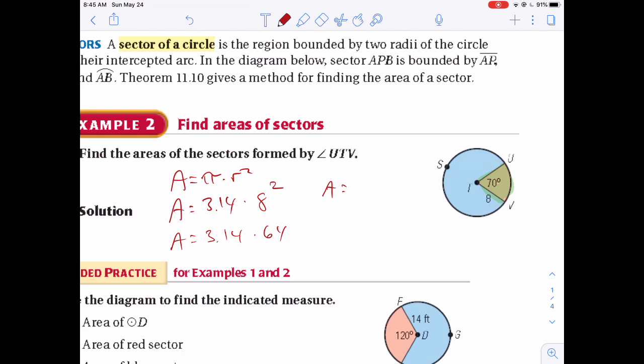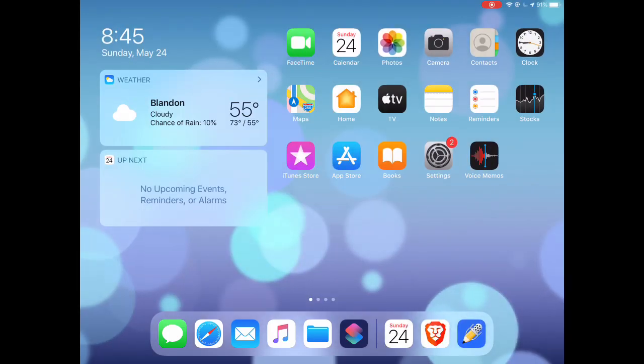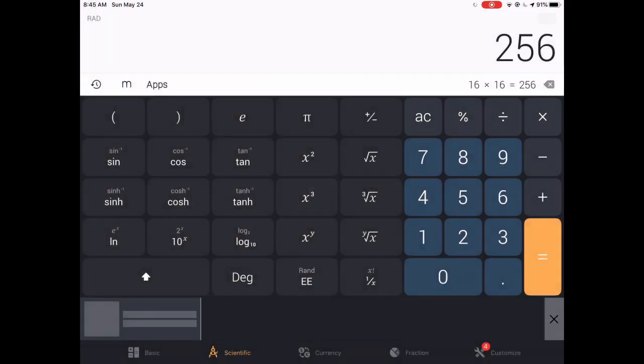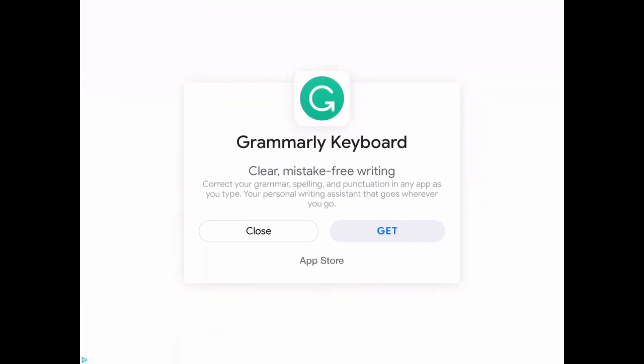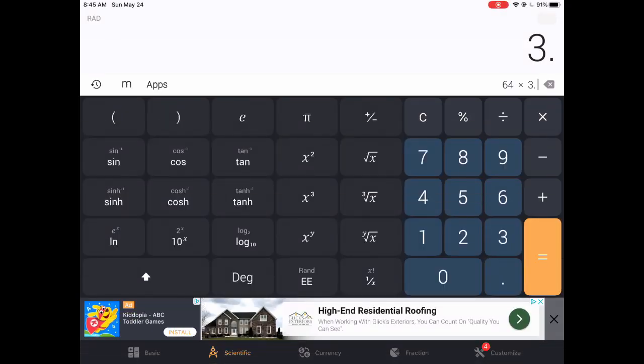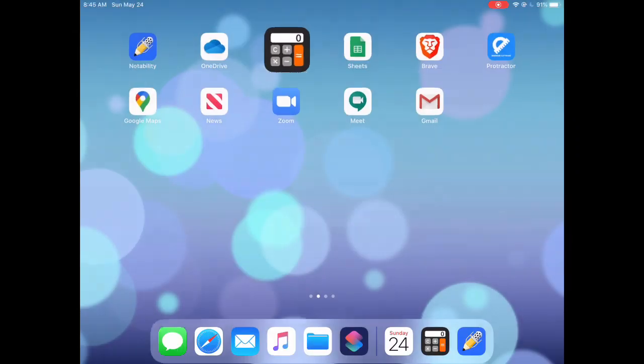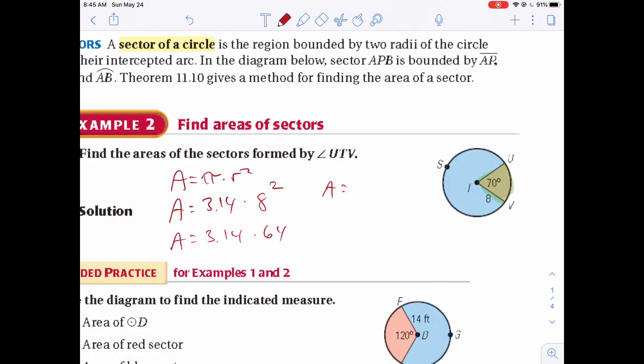Let me get the calculator up here. Calculator. Clear, 64 times 3.14. 201 we'll say. So back to... So there's 201.